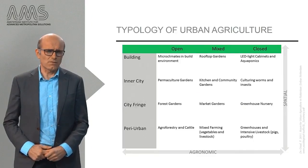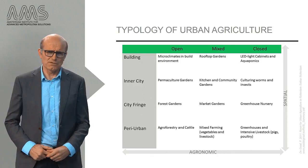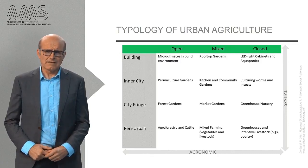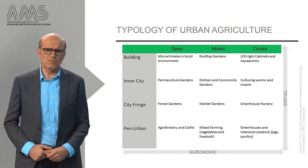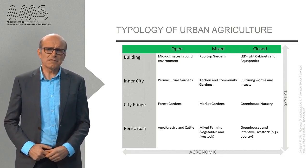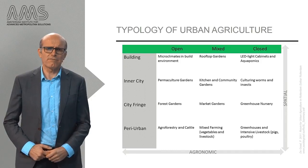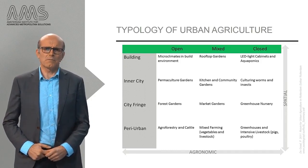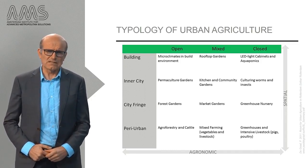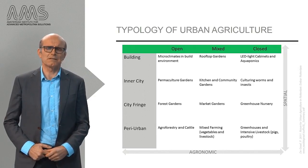Here you see a matrix of urban agriculture types that we developed in various projects in the Netherlands where we looked at the planning of urban food and agriculture in an urban context. The table distinguishes urban food initiatives along two dimensions: a food growing and agronomic dimension on the horizontal axis, and a spatial dimension on the vertical axis.